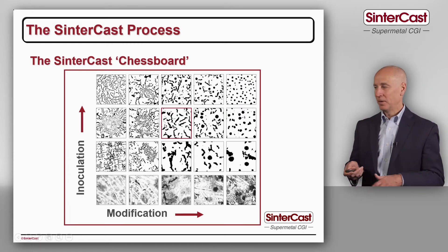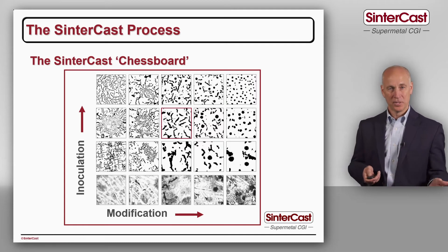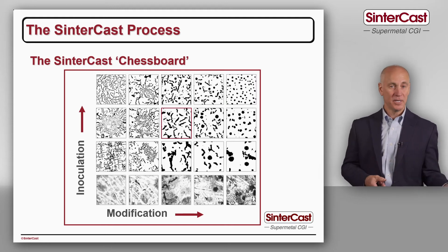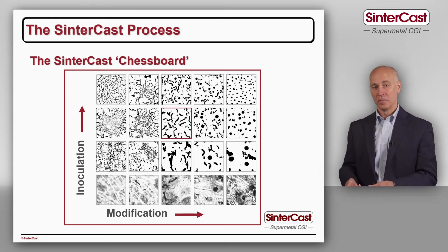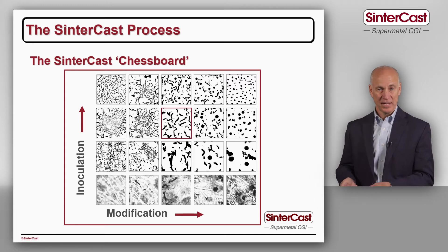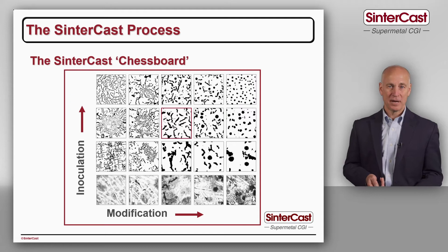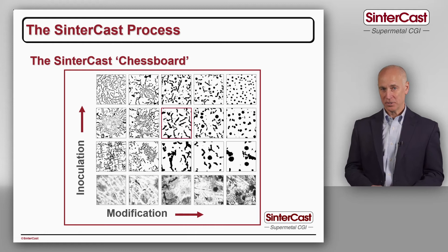The CGI window is bounded on the lower end: when we reduce the modification, we start to make flakes. On the upper side and to the right, we have higher nodularity — either because of the inoculation or the modification — and that will lead to porosity defects. At the lower end, we'll have a patchy, inhomogeneous graphite structure or maybe even carbides. So in order to control the production of CGI, we have to control the inoculant and the modification at the same time to stay inside of this window.